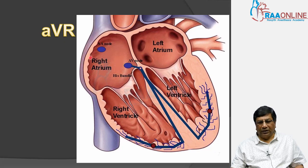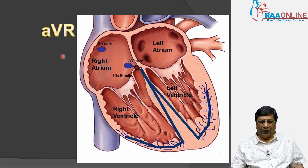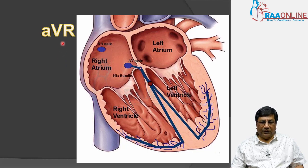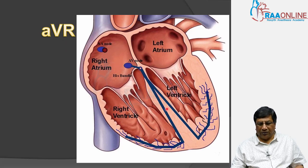As we know, the T wave always follows the direction of the QRS. When the QRS is upright, the T wave is upright. When the QRS is negative, the T wave is negative. Because the QRS is negative in AVR, the T wave is also negative in AVR.